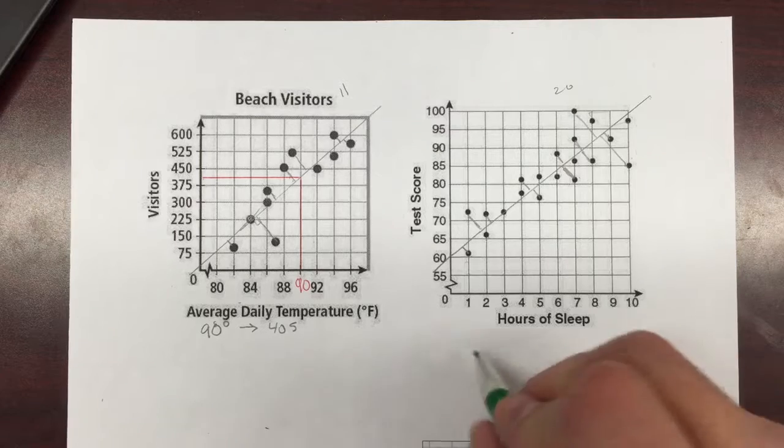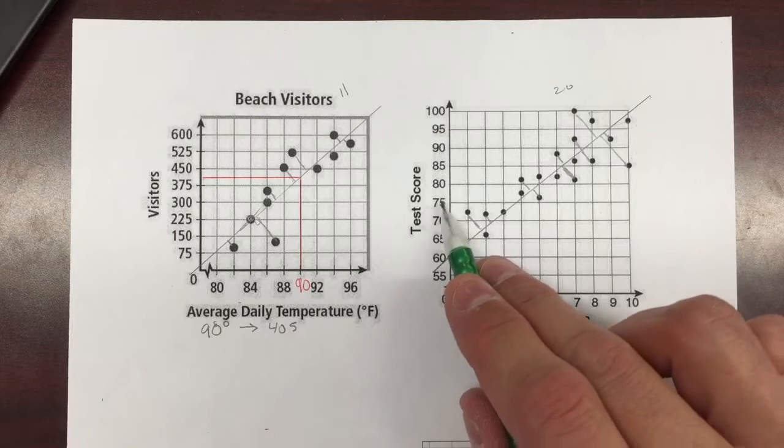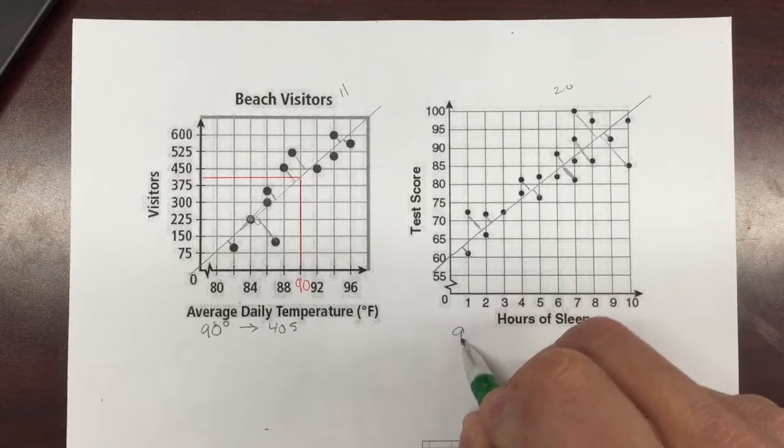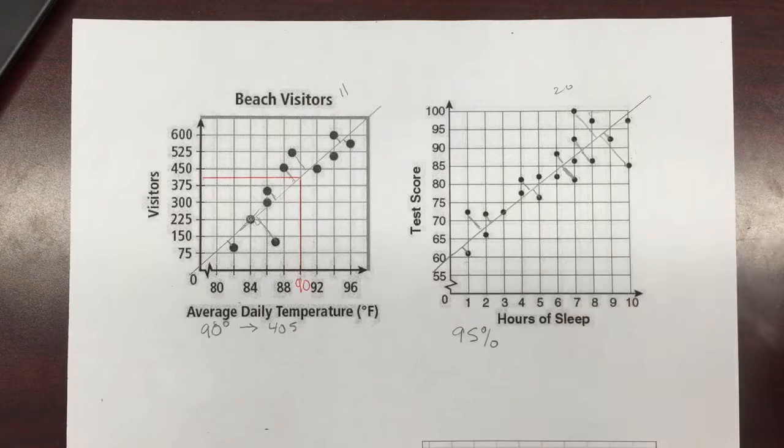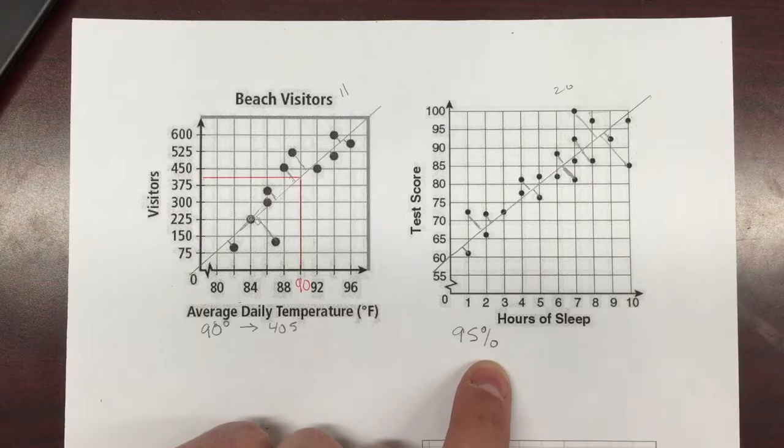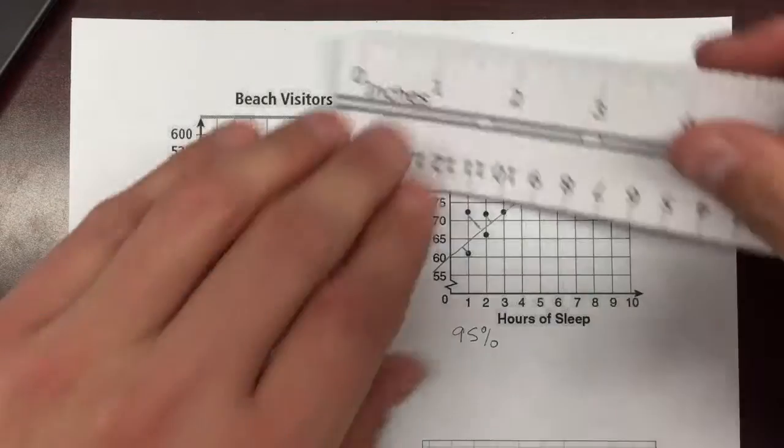So from here now, I want to make another prediction again. So this time we're going to make a prediction for the y-axis. So let's say I have 95% and I want to use 95% as a test score. And I want to make a prediction with that for how many hours of sleep you'd get. So I'll take the 95 with my ruler and I'll go over till I hit the line.